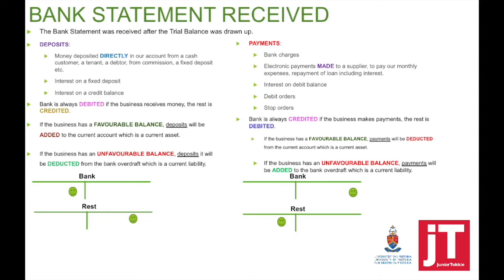If we look at when payments are made, bank will always be credited, the rest will be debited. If the business has a favorable bank balance, it means that payments will be deducted from the current account, which is a current asset, so our assets will decrease. If the bank has an unfavorable bank balance, it means payments will be added to the bank overdraft, which is a current liability — it means that our debt will increase.